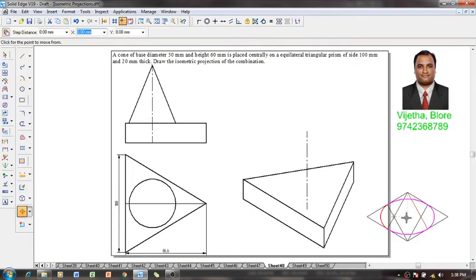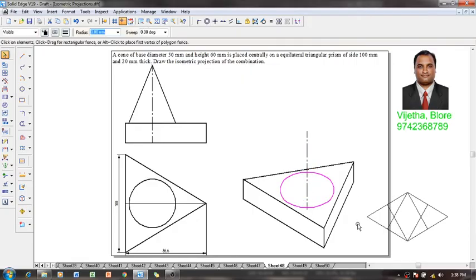Then using a move command, move this arc with respect to the center here. This is going to be the center point. That arc has to be positioned exactly at the end point of the axis over here like this. Now one can see that the arc has been constructed. The construction lines can be deleted now.